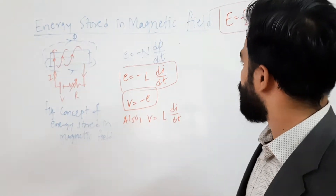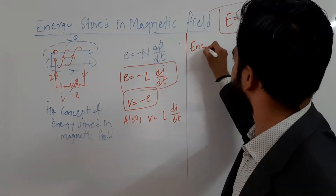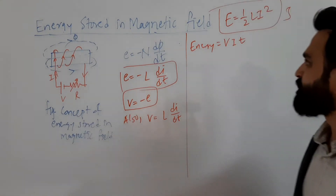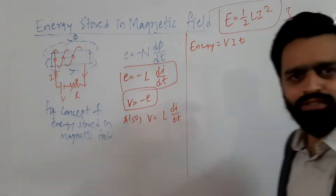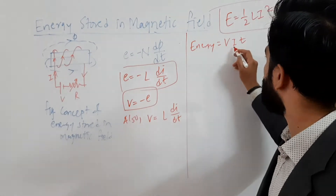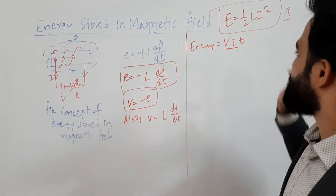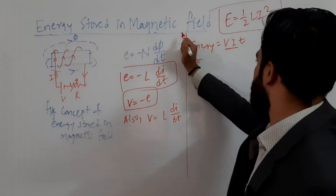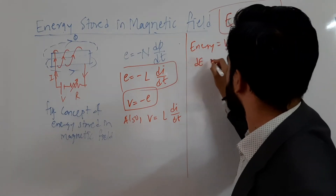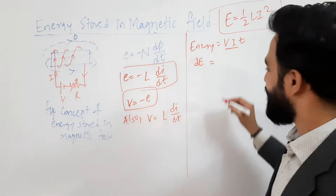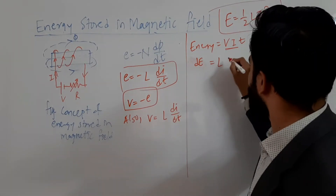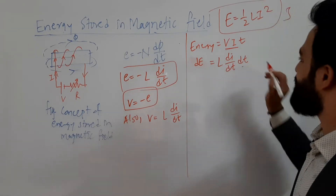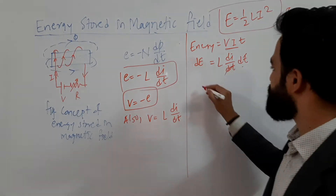Now let's focus on deriving the equation. We have V = L·di/dt. We know that energy E = V·I·t, and V×I is power and t is time. For a small energy dE in a small time dt, I substitute the value of V as L·di/dt, keeping I as it is, and replacing t with dt.